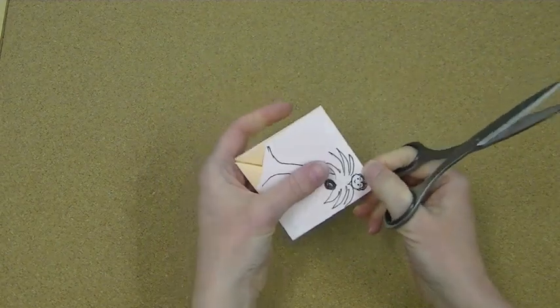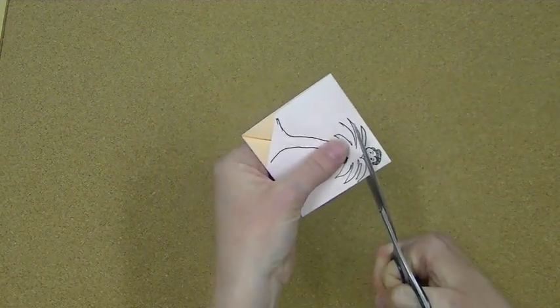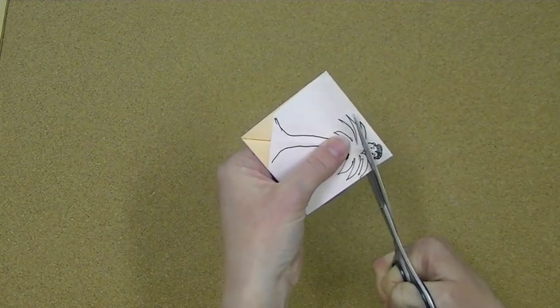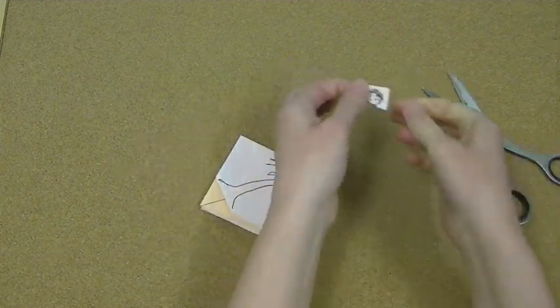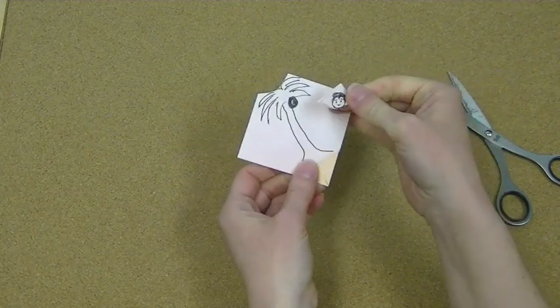And then what we want to do is I'm going to go ahead and take my scissors, and I'm just going to cut this part here for the head out. And I'm going to go ahead and just kind of cut it at a little curve like so, so I get something that looks like this.